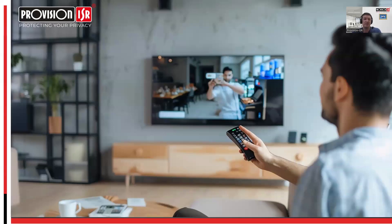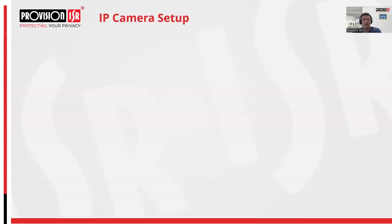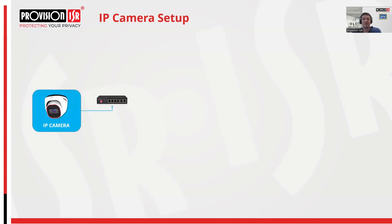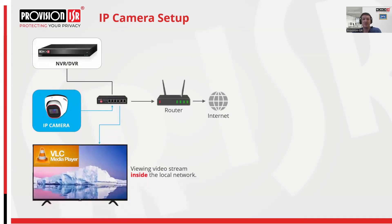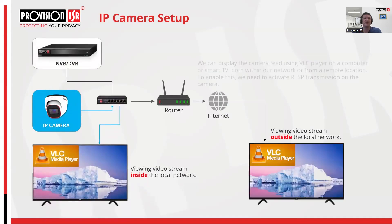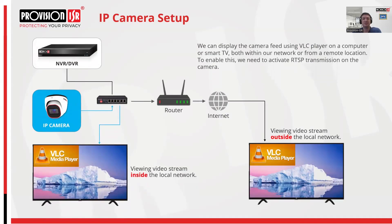Whether your camera is connected through an NVR, in a remote location, or directly to your home network, this tutorial will walk you through the process effortlessly. We'll be utilizing the free VLC media player which is compatible with installation on any smart TV. In VLC, we'll set up the link to connect either to a single camera within our local network or a camera located remotely. Additionally, we'll explore connecting to specific channels on the NVR rather than directly.